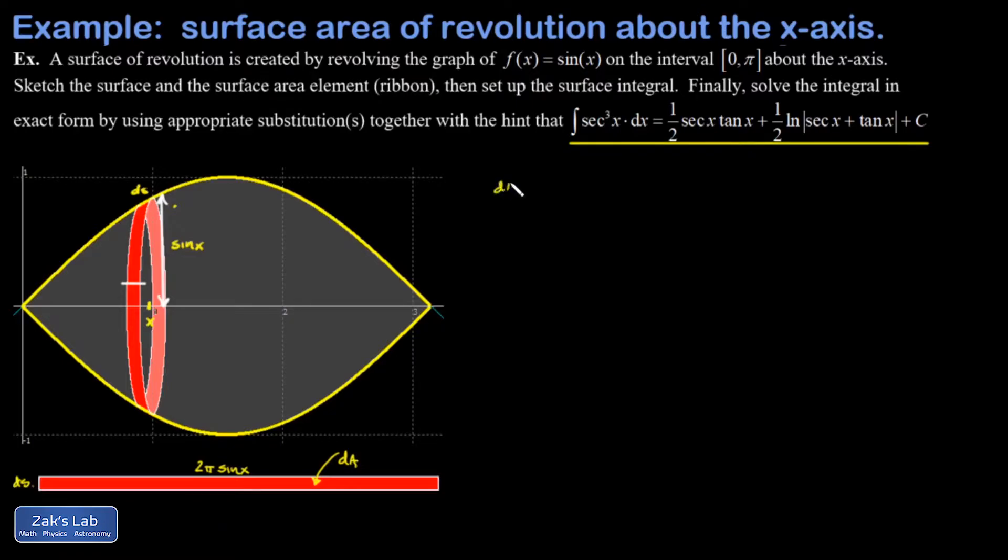So here's where we're at. We have dA is equal to 2 pi sine x ds. Here's where we have to be reminded how to write down the arc length increment, ds. I'll post a link to the video where I derive this. So ds is given by the square root of 1 plus the derivative of the curve, squared. And the derivative of sine x is cosine x. So there's my arc length, ds.